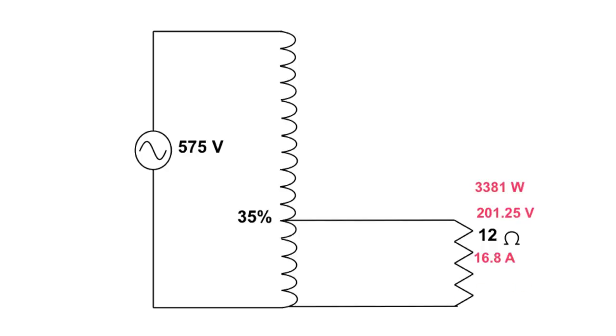Like I just said, whatever this watts is here, it's got to be the same over here, which will give us 3,381 watts on the primary side. Then to get our primary current, all we have to do is take 3,381 and divide it by 575 volts to get a current of 5.88 amps right there.